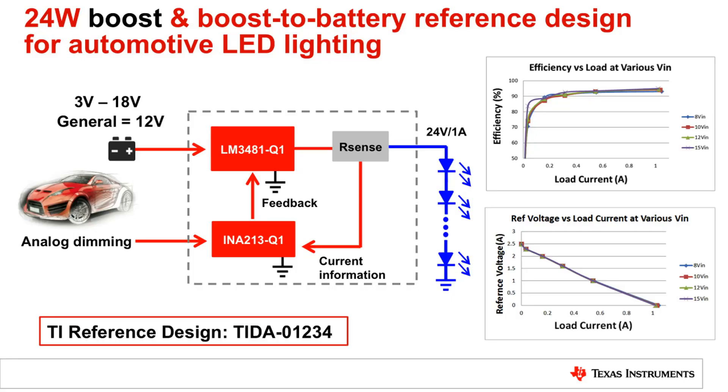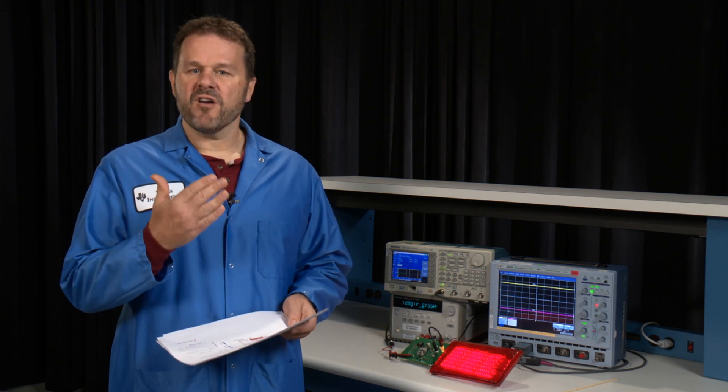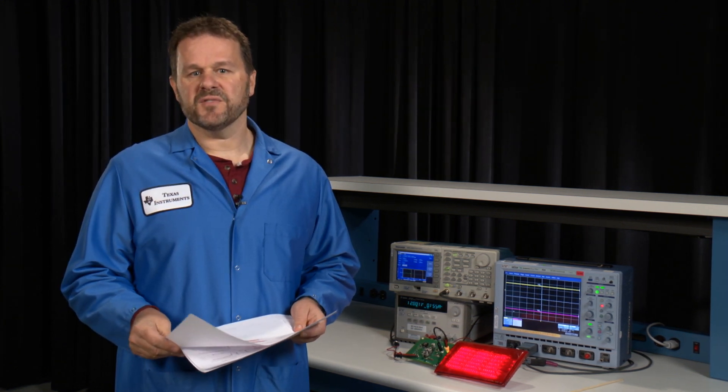So the first version is a boost version. In this condition, you have a 12 volt in as a nominal voltage and a 24 volt out one amp solution. The current is fed back via an R sense to an operational amplifier and then back to the 3481. So once again, this will offer high efficiency and a very smooth linear range of dimming.